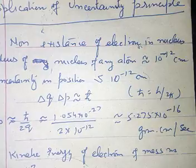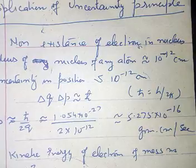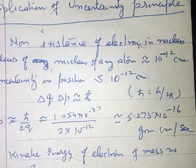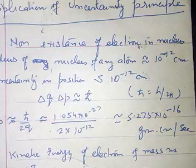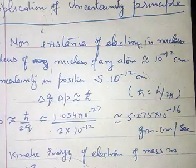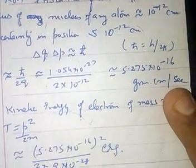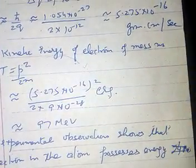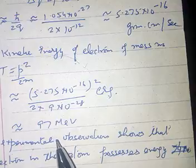Now the kinetic energy of the electron of mass is given by t is equal to p square upon 2m. Putting these values, p is equal to 5.275 into 10 raised to the power minus 16 upon 2 into m, where m is the mass, 9 into 10 raised to the power minus 28 gram. So on solving this equation, the above value comes to be 97 MeV.